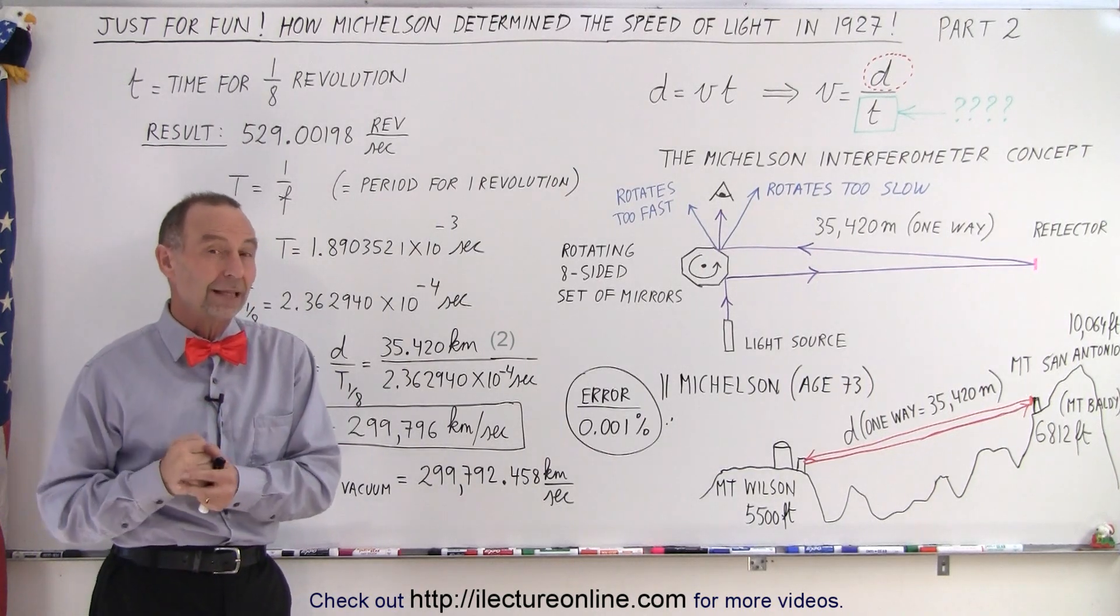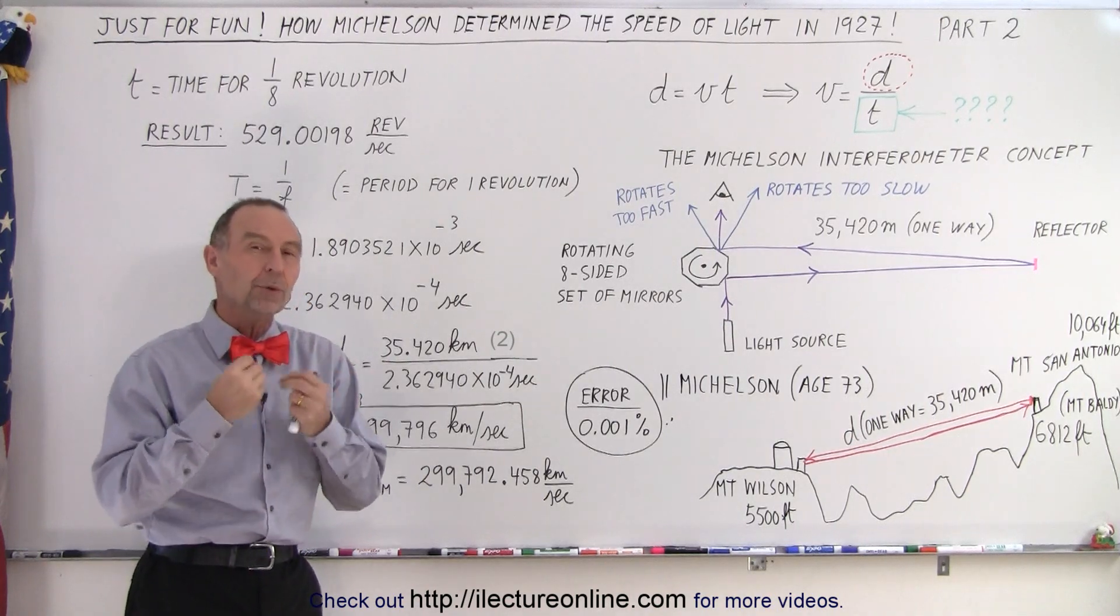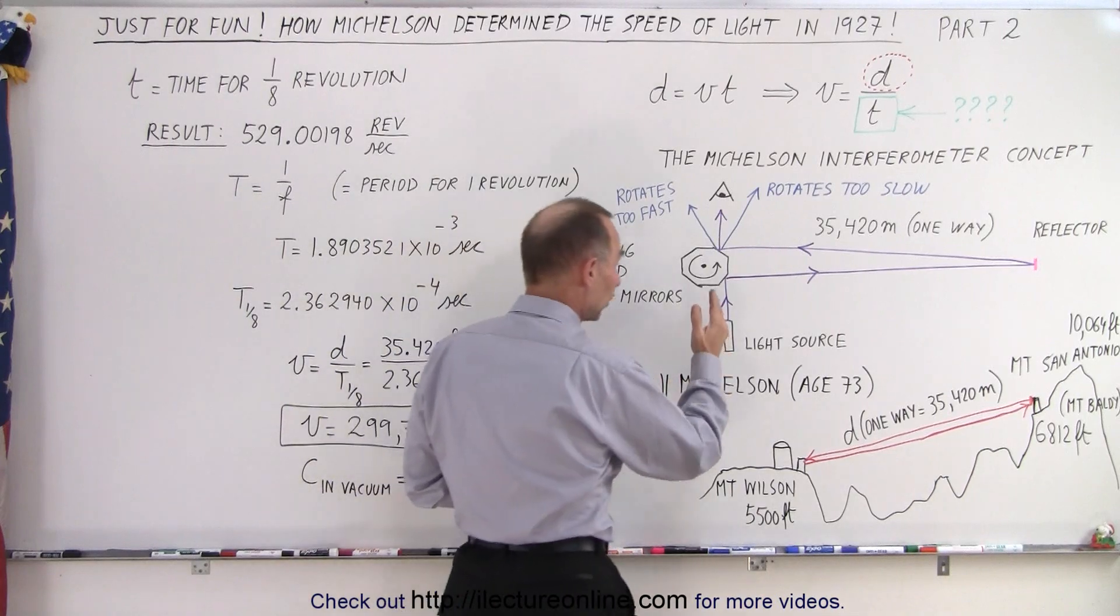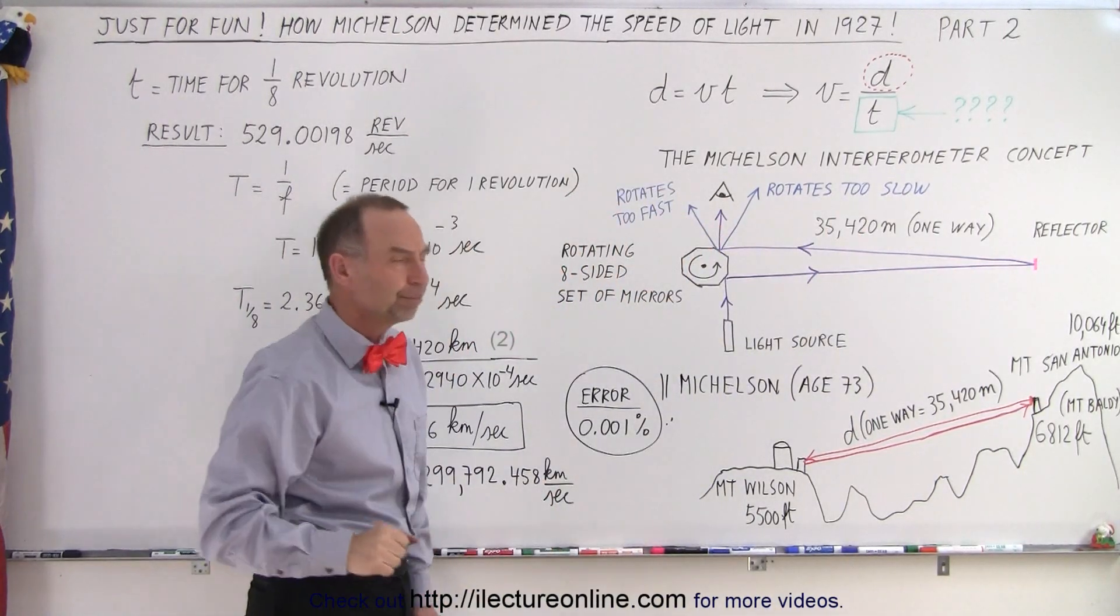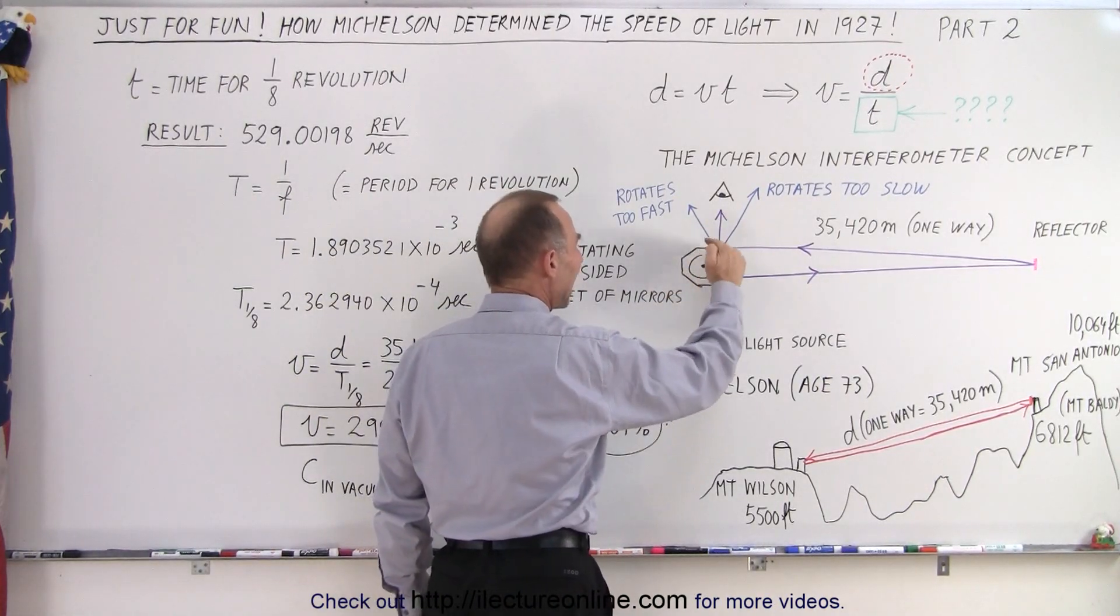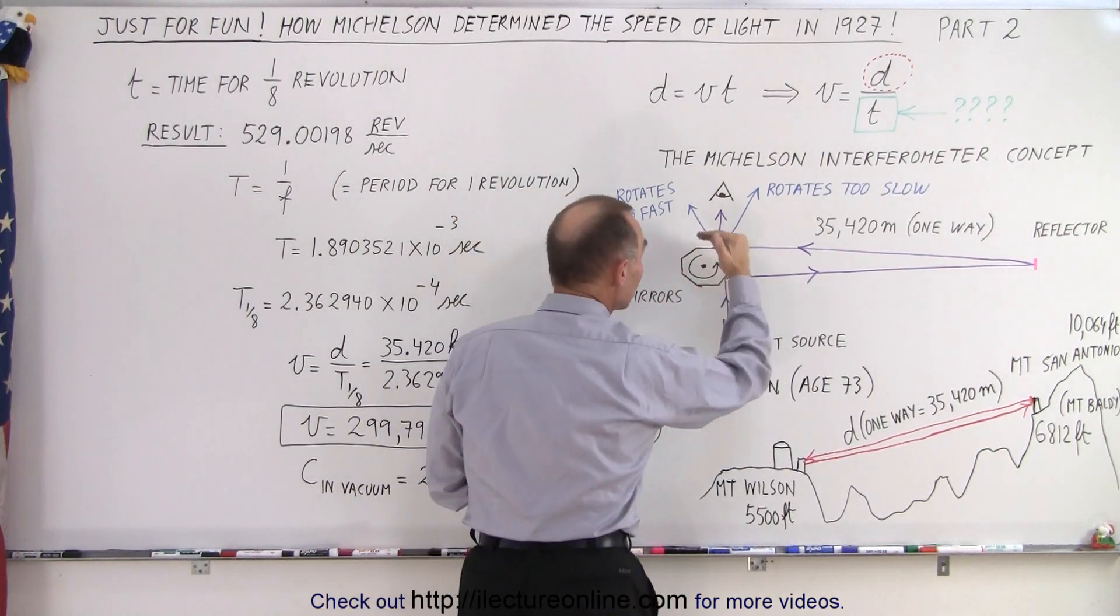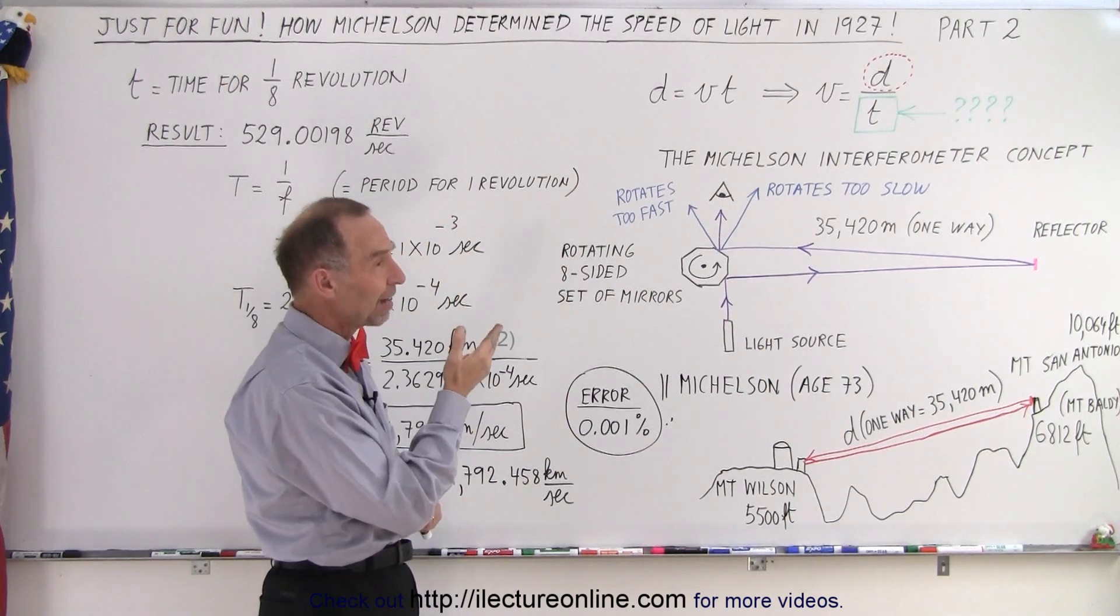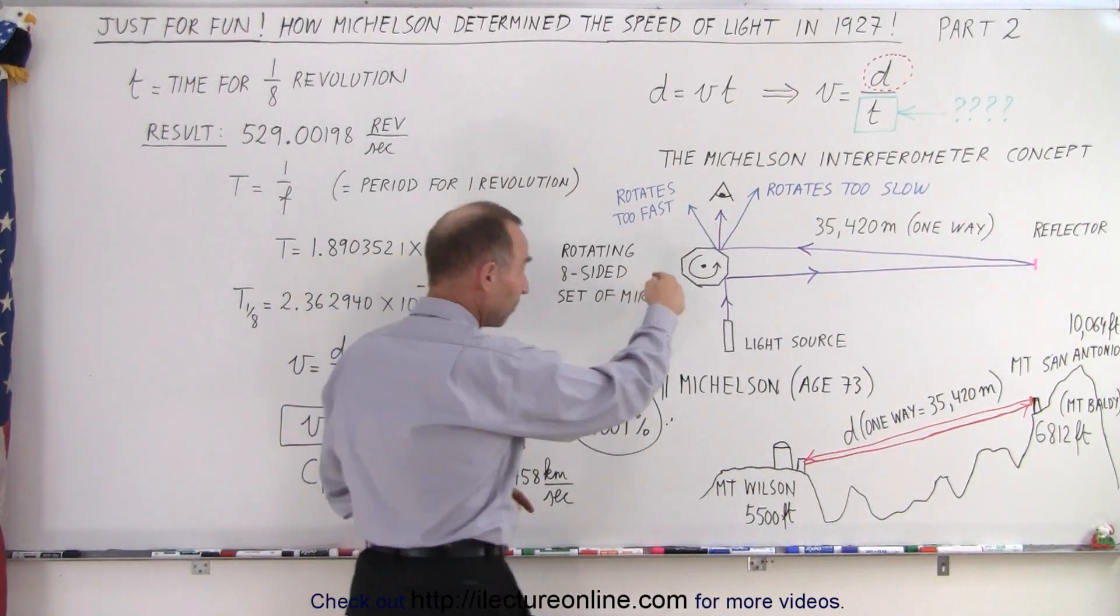That was of course again not an easy feat unless you come up with some brilliant method. Michelson, who had built an interferometer, figured out an incredible way to measure the time that it took for the light to go from Mount Wilson to Mount Baldy and back to Mount Wilson. They had a rotating object to which they attached eight mirrors, and the angle between each mirror was exactly 45 degrees.